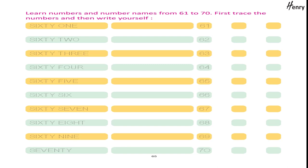Learn numbers and number names from 61 to 70. First trace the numbers and then write yourself: 61, 62, 63, 64, 65, 66, 67, 68, 69, 70.